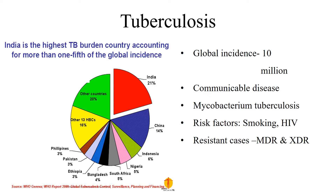TB is a communicable disease caused by Mycobacterium tuberculosis. It affects any part of our body, especially the respiratory system, so pulmonary TB is the most common form. There are certain risk factors for its development: prolonged smoking or immunosuppressive conditions like HIV.